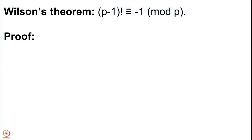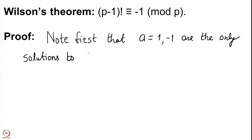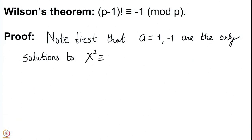We now prove that (p−1)! ≡ −1 mod p. First note that a = 1 and a = −1 are the only solutions to x² ≡ 1 mod p.